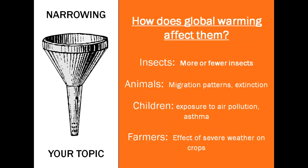Do another Google search with one of the groups you listed and think about how your topic affects that group. For example, global warming might cause populations of insects to increase or decrease, animals' migration patterns may be affected, and there may be an increased risk of extinction for some species. Exposure to increased air pollution leads to asthma in children, and farmers' crops might be affected by severe weather that is a consequence of global warming.